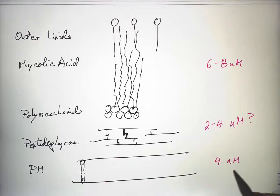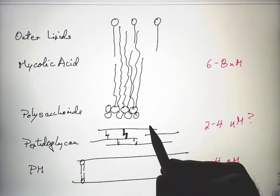The peptidoglycan layer maybe 2 to 4 nanometers. I haven't found a good source. The polysaccharides, mycolic acid and outer lipids, about 6 to 8 nanometers.